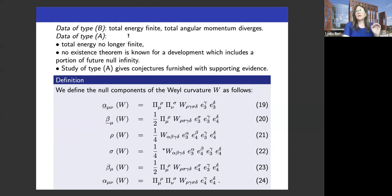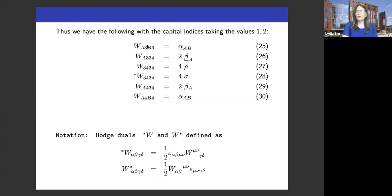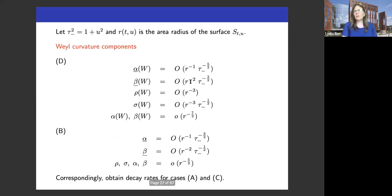If you look at the Christodoulou-Klainerman spacetime, they find that at null infinity your spacetime has a certain decay behavior in the curvature components. The leading order term decays like r^{-1}, and tau_minus is just sqrt(1 + u²), where u is the optical function. So you have a tau_minus decay sitting here. We will talk about this rho and sigma parts a lot in the second half of the talk. If your initial data decays fast already, you recover some of this decay towards Minkowski space in how your curvature components decay. In the B spacetimes, you have very slow decay, so you don't get the r^{-3} decay — everything else is r^{-5/2}.